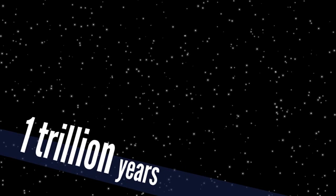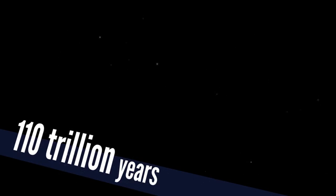After a trillion years, stars stop forming in the universe, but it takes 110 trillion years for them all to flicker out. And this is where the sky goes dark.